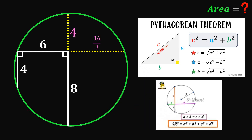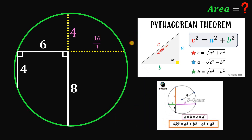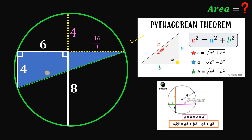To use the Pythagorean theorem, we draw the diameter of this circle. We have a right triangle inside the circle, and when a right triangle is inscribed in a circle, the hypotenuse serves as the diameter. Since it is the diameter, it equals two times the radius.